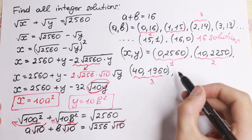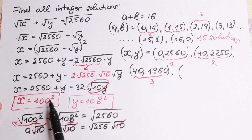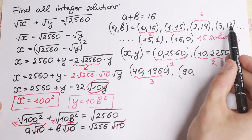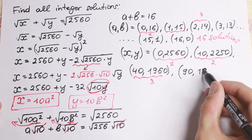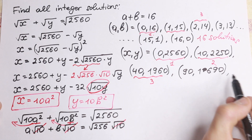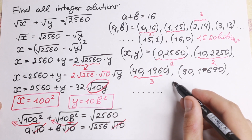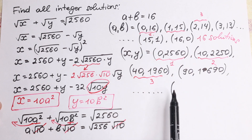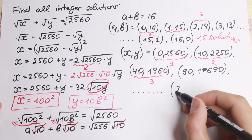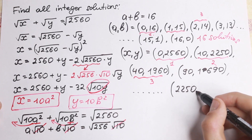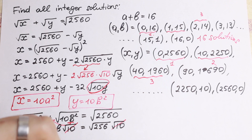We continue this pattern with further pairs. By symmetry, the pair (a=15, b=1) gives (x=2250, y=10), which is just the swap of the second pair. Similarly (a=16, b=0) gives (x=2560, y=0), the swap of the first pair. So all 16 pairs are obtained by running a from 0 to 16 and computing x=10a², y=10(16−a)².